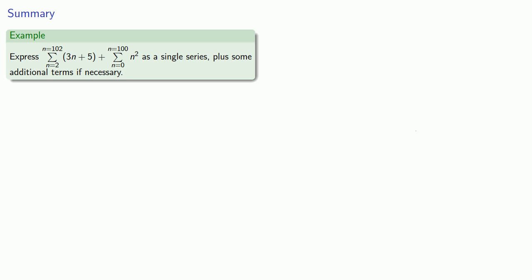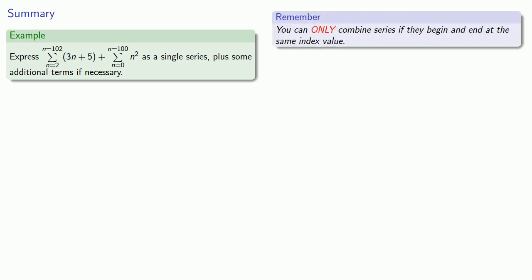So let's say I want to sum n equals 2 to 100 of the series whose terms are 3n plus 5, and add to that the sum from 0 to 100 of the series whose terms look like n squared. Now an important idea to remember here is that we can only combine series if they begin and end at the same index value. So the first thing to notice is that the first series runs from 2 to 102, while the second series runs from 0 to 100. This means that if we look at the terms of the series, they overlap in the interval between 2 and 100.